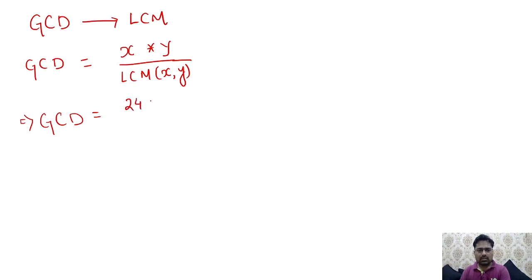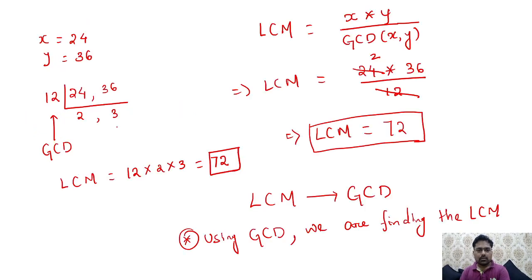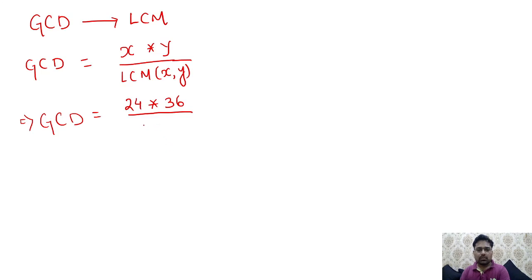With the same example, 24 and 36: we found LCM = 72, so (24 × 36) / 72 = 12. We got the GCD by using the LCM.